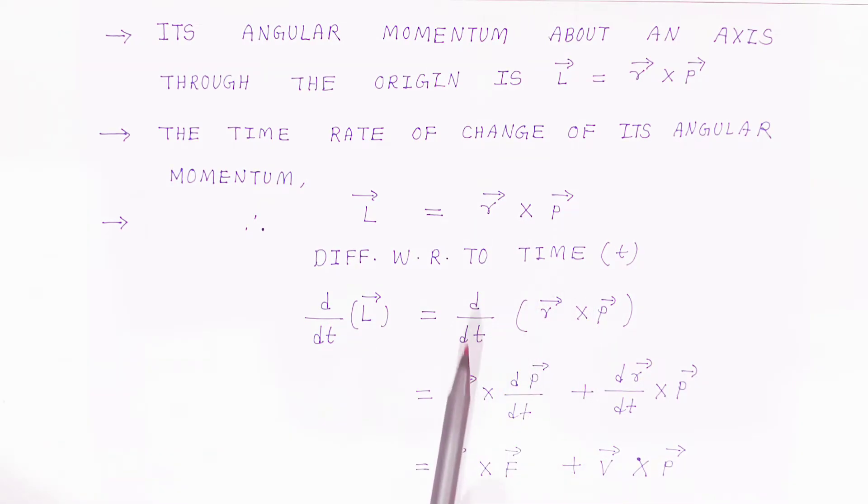So r bar as it is, we differentiate p bar, that is dp bar upon dt, plus p bar as it is, we differentiate first term, dr bar upon dt. This dp bar upon dt is nothing but force. Plus dr upon dt is nothing but velocity of the particle.